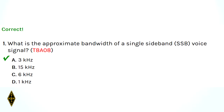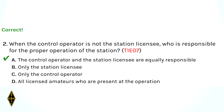Here's question 1: what is the approximate bandwidth of a single sideband signal? That's 3 kilohertz, so 1A. Question 2: when the control operator is not the station licensee, who is responsible for proper operation? It's a shared responsibility between the control operator and the station licensee — they're equally responsible. 2A.